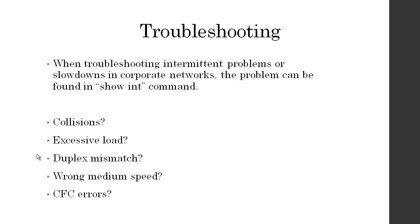Troubleshooting: when troubleshooting intermittent problems or slowdowns in corporate networks, show int can give you help finding those. How many collisions am I having, and why? Is somebody broadcasting too much? Excessive load — maybe a NIC card is freaking out and just broadcasting automatically. Is there a duplex mismatch — is it set for half duplex, and why? Is it the wrong speed? And am I getting CRC errors — maybe a bad NIC card creating bad packets? A lot of these issues can be found just by doing the show interface command.